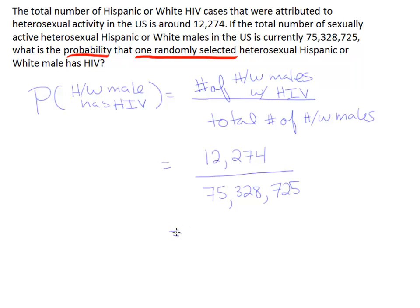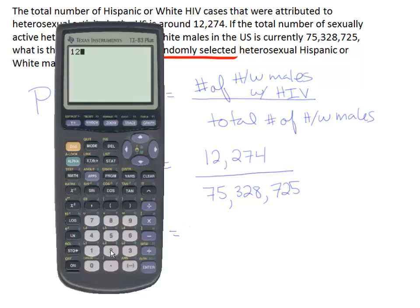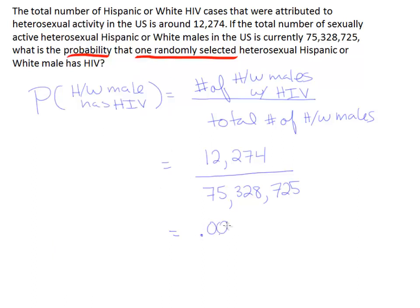If we divide these two values — 12,274 divided by 75,328,725 — we get the answer in scientific notation. The negative exponent indicates we move the decimal place four places to the left, putting three zeros before 1629. So our answer is approximately 0.0001629.